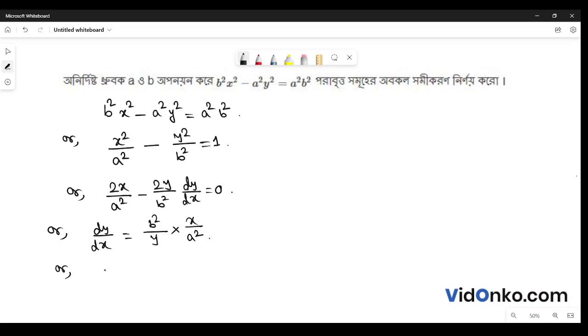Now, let's look at this. If we rearrange, x by y dy dx is equal to what we get here, x square by a squared.